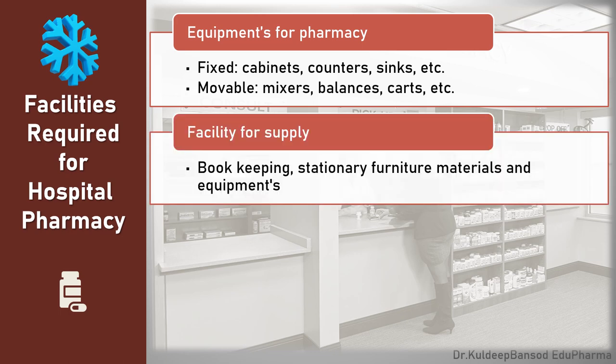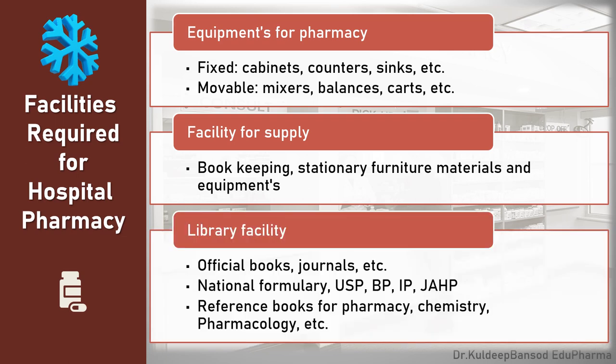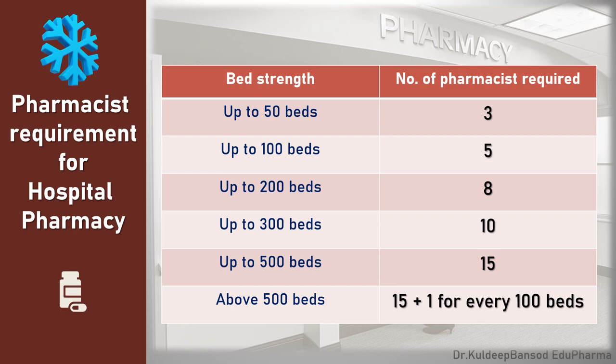Library facilities should be provided and should contain official books, journals, etc. Some national formularies like USP, BP, IP, and reference books on pharmacy, chemistry, pharmacology, etc. should be kept there. Another requirement is personnel or pharmacists. The number of prescriptions received, dispensed, and the number of beds and occupancy rate are taken into consideration to calculate the number of pharmacists required.